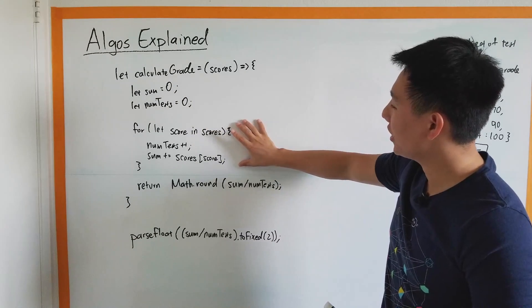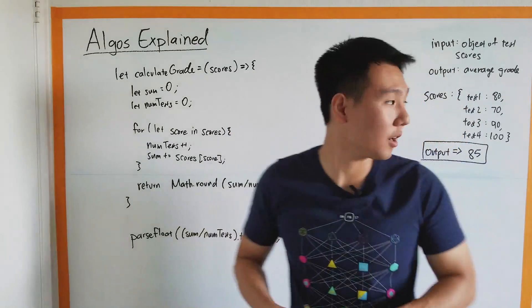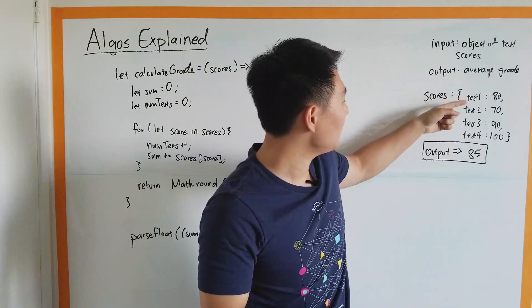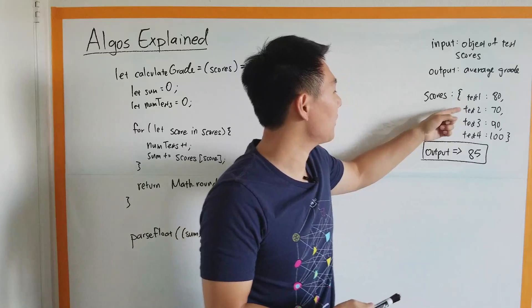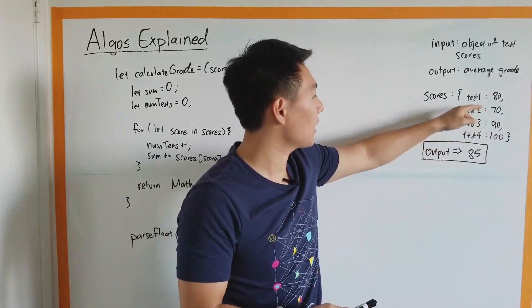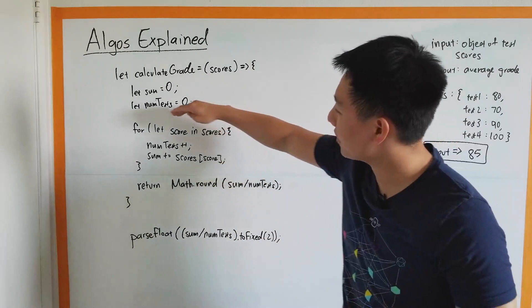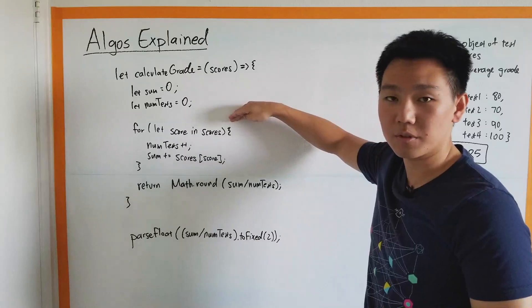We start these off at zero, and we're going to go through. Here is our next step: we're going to parse through the object. Our object looks something like this. We just have to hit each and every one of these, and as we get to each one, we have to add that score to the sum and tally up the number of tests we've seen.